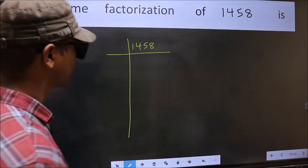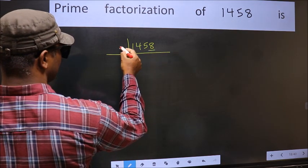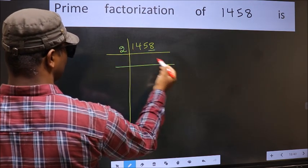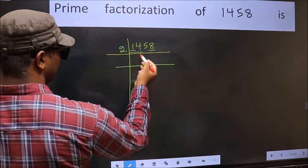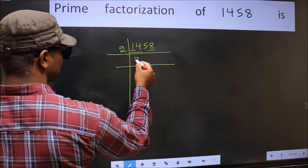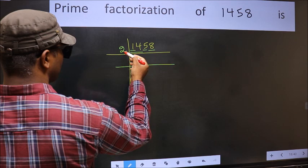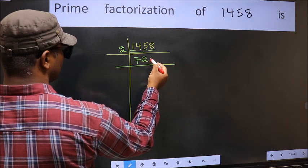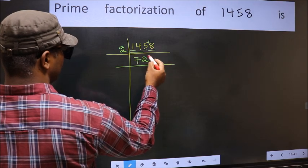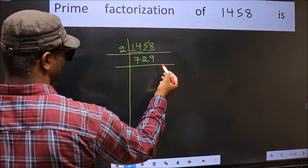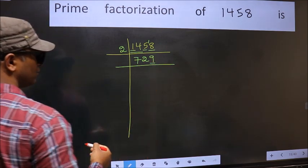Next, in this number, last digit 8 is even so take 2. First number 1 is smaller than 2 so take 2 numbers: 14. When do we get 14 in the 2 table? 2 sevens are 14. The other number is 5. A number close to 5 in the 2 table is 2 twos 4. 5 minus 4 is 1, 1 carried forward, giving 18. When do we get 18 in the 2 table? 2 nines 18. Now last digit 9 is not even so not divisible by 2.